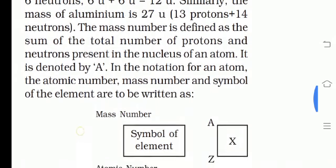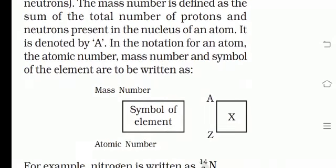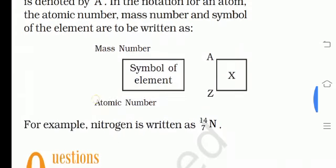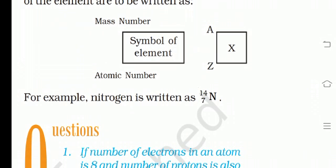In the notation for an atom, the atomic mass, atomic number, mass number, and the symbol of an element are written as follows. Pehle likhenge mass number, phir symbol of that atom, aur last mein atomic number. For example, nitrogen ka mass number hai 14, symbol N, aur atomic number of nitrogen is 7.